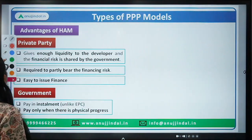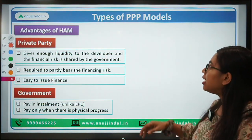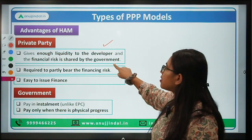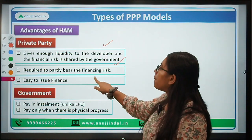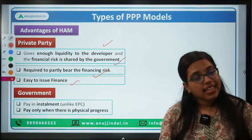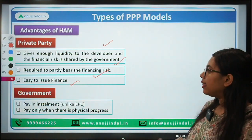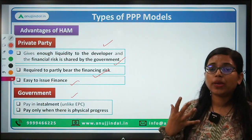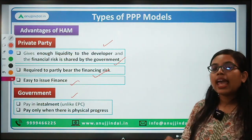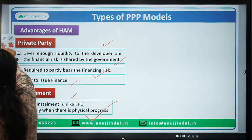Advantages of the Hybrid Annuity Model: For the private sector, they get enough liquidity because 40% of the entire cost is borne by the government, which shares the financial risk. They are required to bear only part of the financing risk and it is easier for them to raise finance with government involvement enhancing credibility. For the government, they need to pay in installments unlike EPC, where they had to pay the entire cost, and the variable part is paid only when there is physical progress in the project.